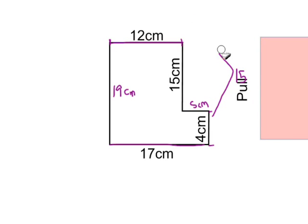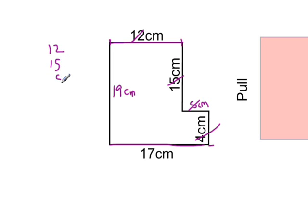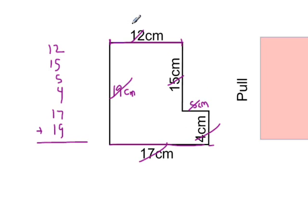Another little trick you might want to use is when you're calculating the perimeter, I like to cross the numbers out as I add them. Starting with 12, we're going to add 12 plus 15 plus 5 plus 4 plus 17 plus 19. Then you would just go ahead and add all these up. The reason I cross these out is just to make sure that I've added up all the sides of the irregular shape.